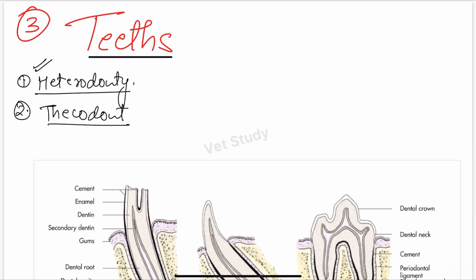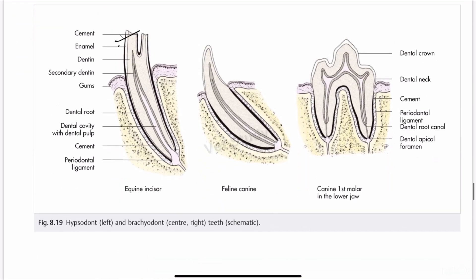The next term is thecodont. In thecodont, teeth are implanted into the alveolar socket of the upper and lower jaw bones along their margin, and this arrangement is called thecodont. So this is the tooth and it is embedded in the alveolar socket — this arrangement is known as thecodont.